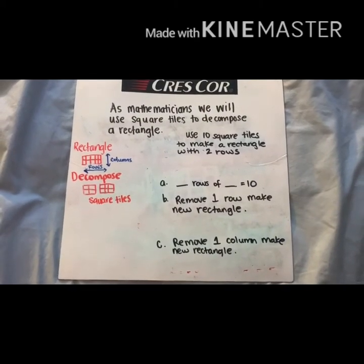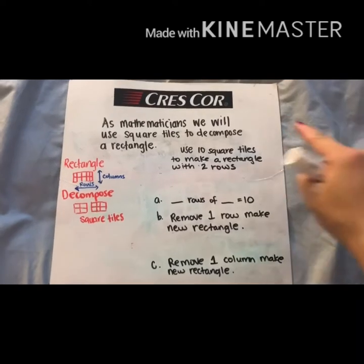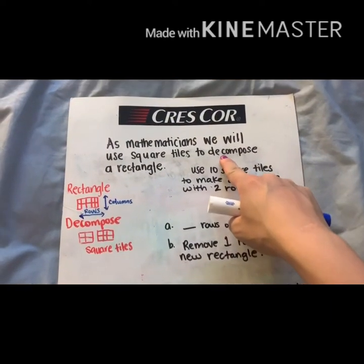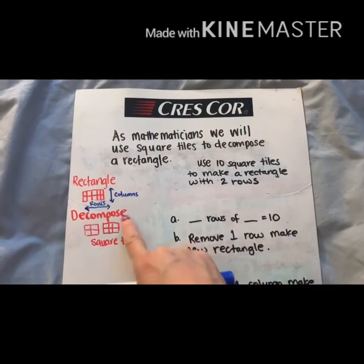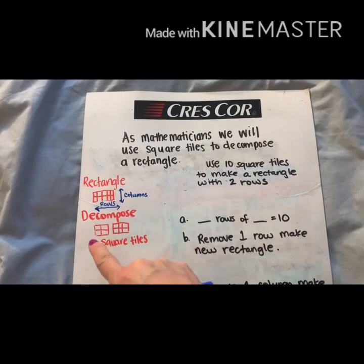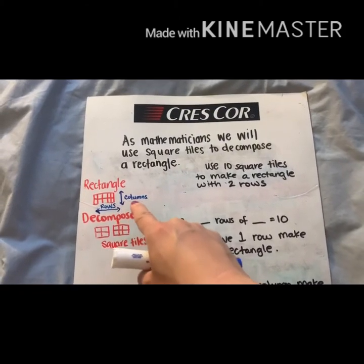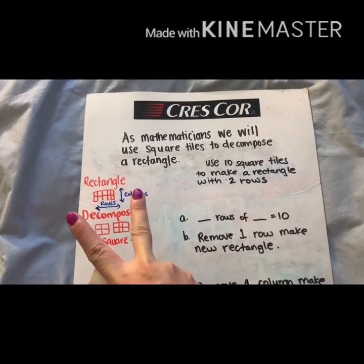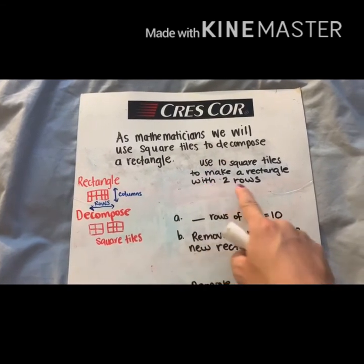Today, Trojans and Lions, we're going to continue to decompose. Remember, decompose means to break apart. We have our rectangles that we're creating which have rows and columns and we're gonna break them apart. Today we're gonna do it a little bit differently.